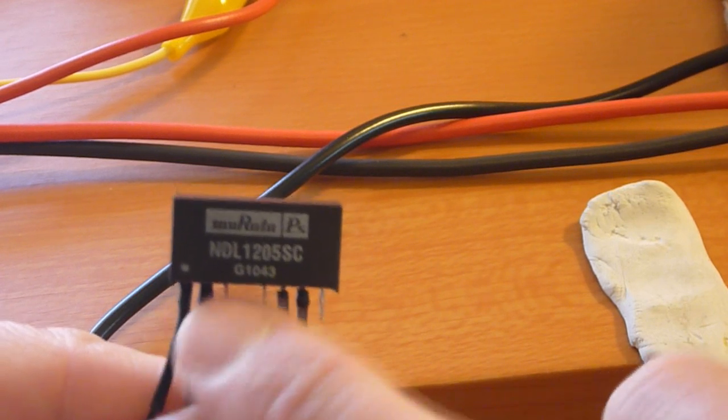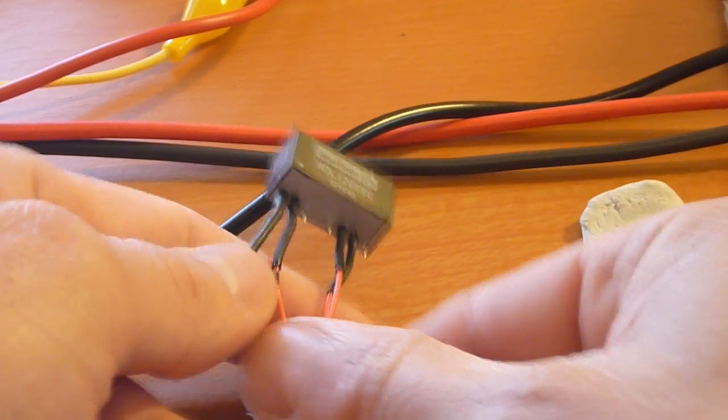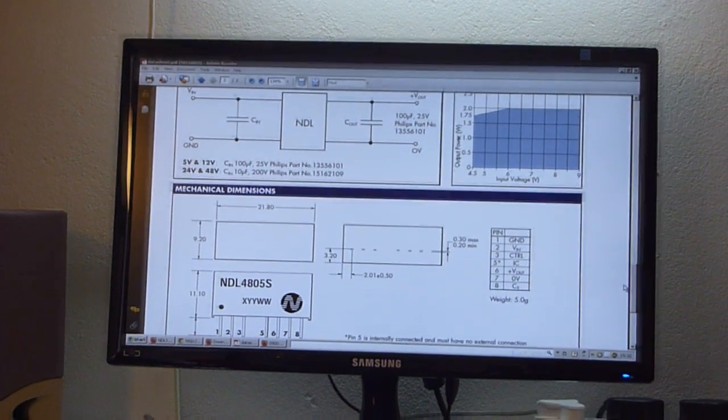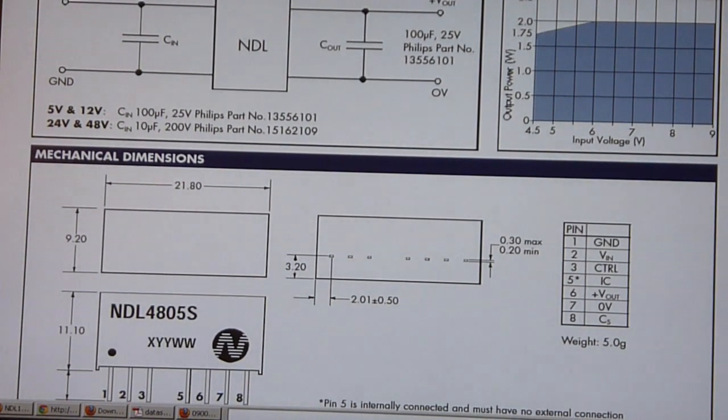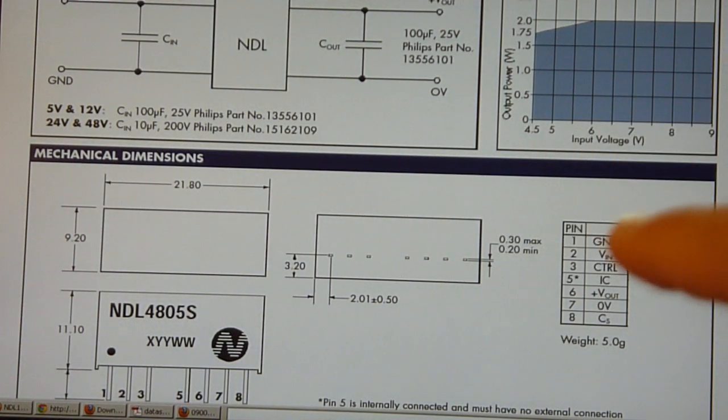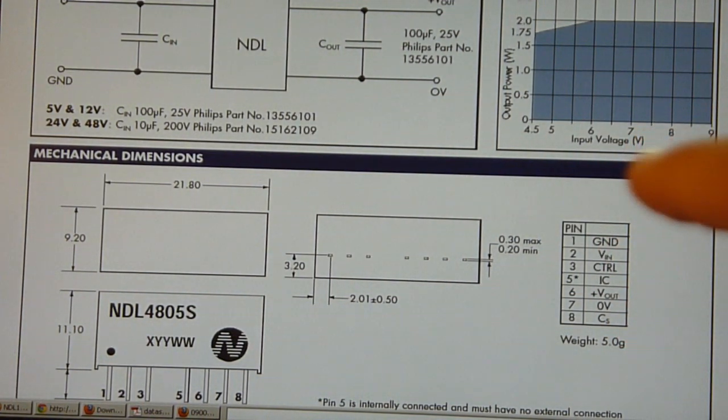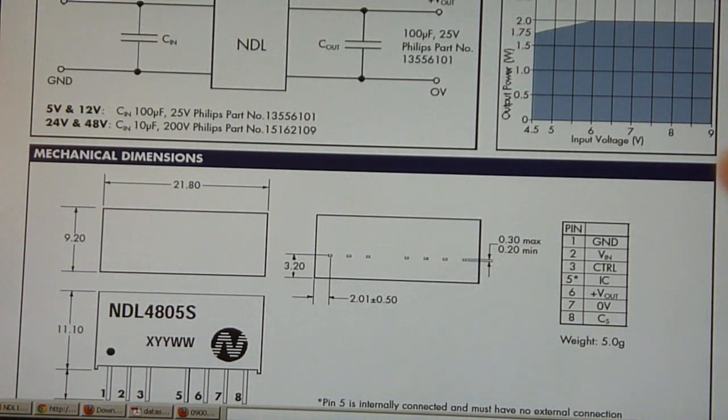The one thing I'll make people aware of, I'll just quickly point you to the actual data sheet. You'll see there, there's a detail of the pins. So basically 1 is ground, 2 is your voltage in, 3 is control, 5 isn't used it's internal, 6 is your positive voltage out, 7 is your negative voltage out, and 8 is the built-in capacitor.